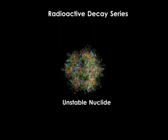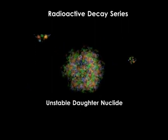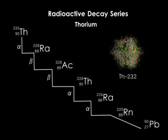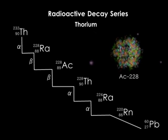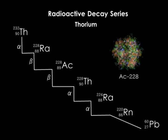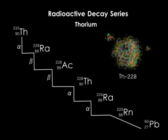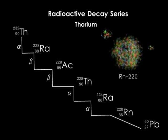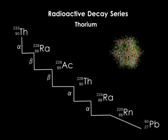Sometimes a radioactive decay may result in a new nuclide which is also unstable. The daughter nuclide will thus undergo another decay until a stable isotope is obtained. This is called a decay series. For instance, thorium-232 is unstable and undergoes alpha decay to form radium-228. Radium-228 is also unstable and undergoes beta decay to form actinium-228. Actinium-228 is unstable as well and undergoes beta decay to form thorium-228. Thorium-228 undergoes alpha decay to form radium-224, which undergoes another alpha decay to form radon-220. This decay series continues until we get a stable nuclide, lead-208.